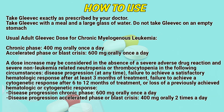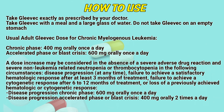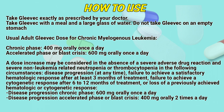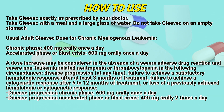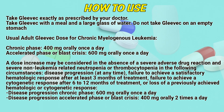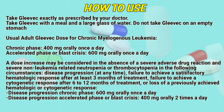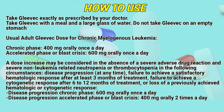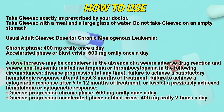A dose increase may be considered in the absence of a severe adverse drug reaction and severe non-leukemia related neutropenia or thrombocytopenia in the following circumstances: disease progression at any time; failure to achieve a satisfactory hematologic response after at least 3 months of treatment; or failure to achieve a cytogenetic response after 6 to 12 months of treatment.